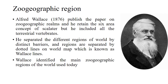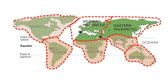But Wallace included all terrestrial vertebrates. He separated the different regions of the world by distinct barriers, and regions are separated by a dotted line on the world map, which is known as Wallace Lines. Wallace identified the main zoogeographic regions of the world used today.